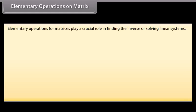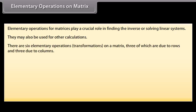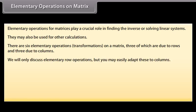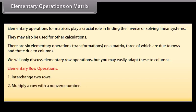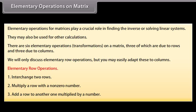Elementary operations on a matrix: Elementary operations for matrices play a crucial role in finding the inverse or solving linear systems. They may also be used for other calculations. There are 6 elementary operations or transformations on a matrix — 3 due to rows and 3 due to columns. We will only discuss elementary row operations. The three elementary row operations are: interchange two rows; multiply a row with a non-zero number; add a row to another one multiplied by a number.